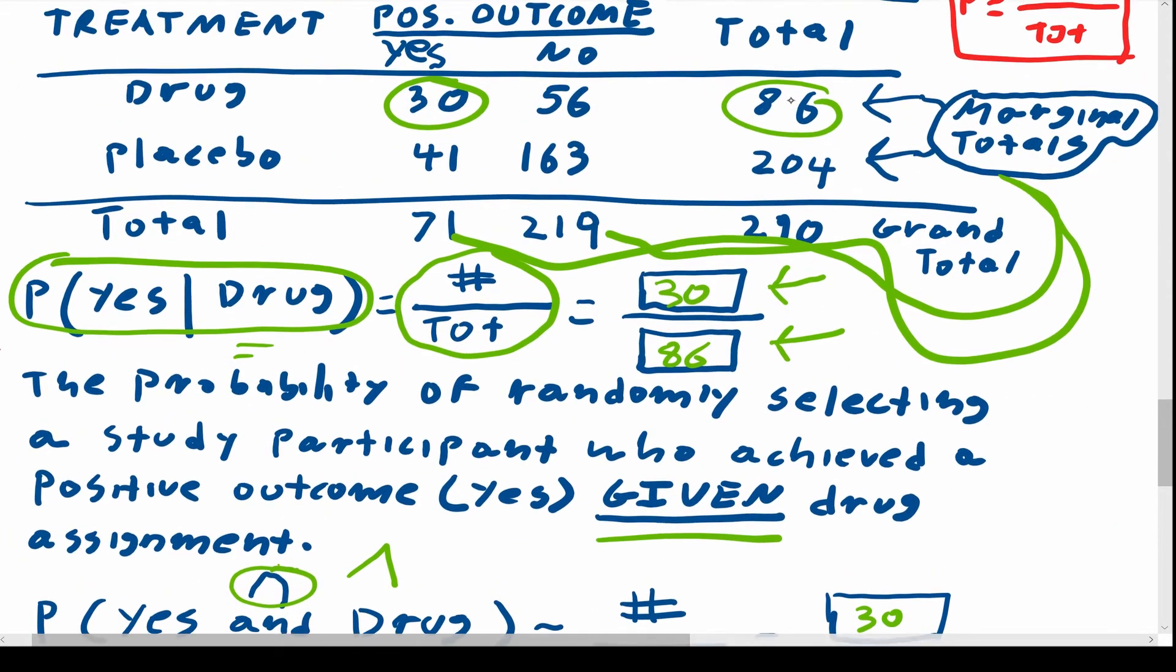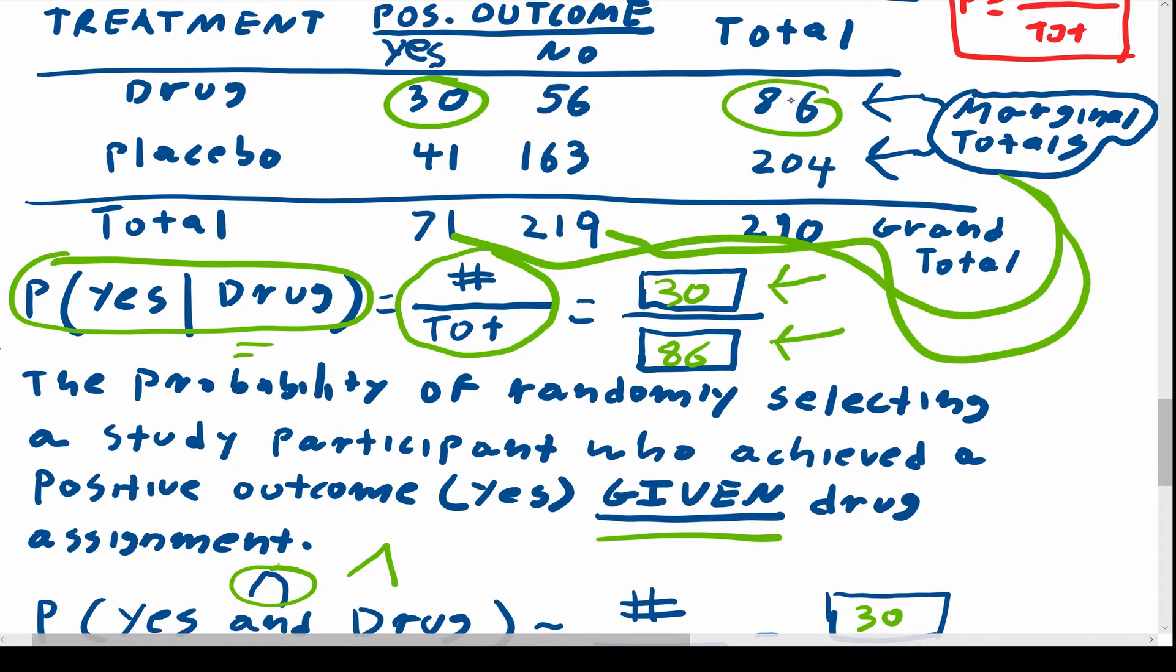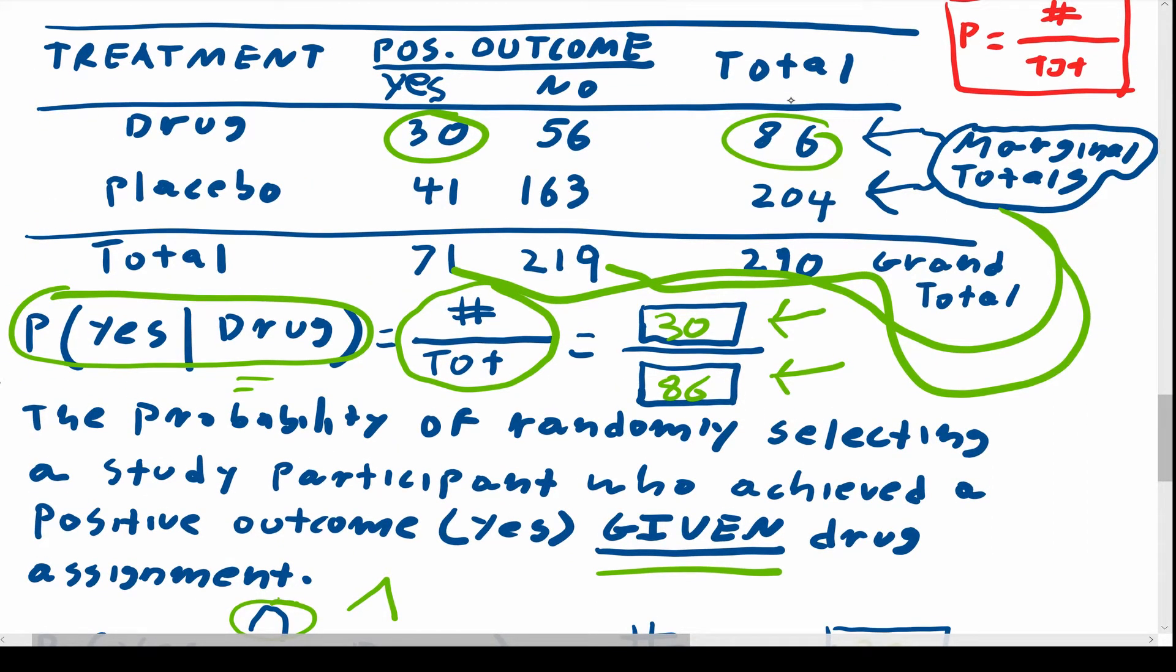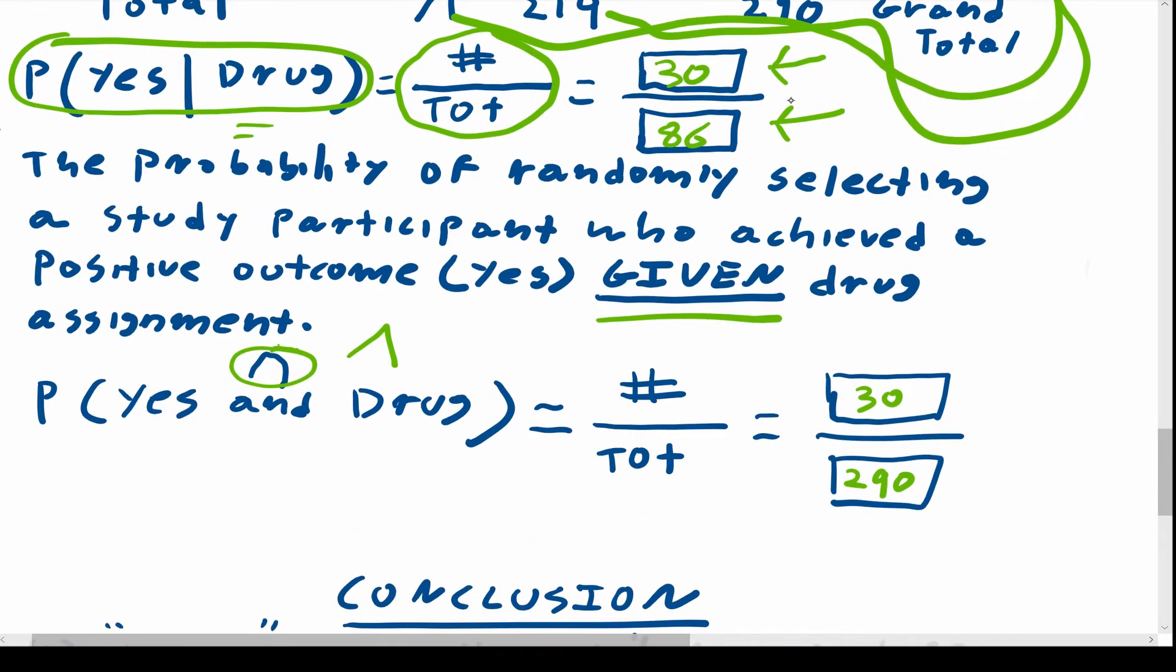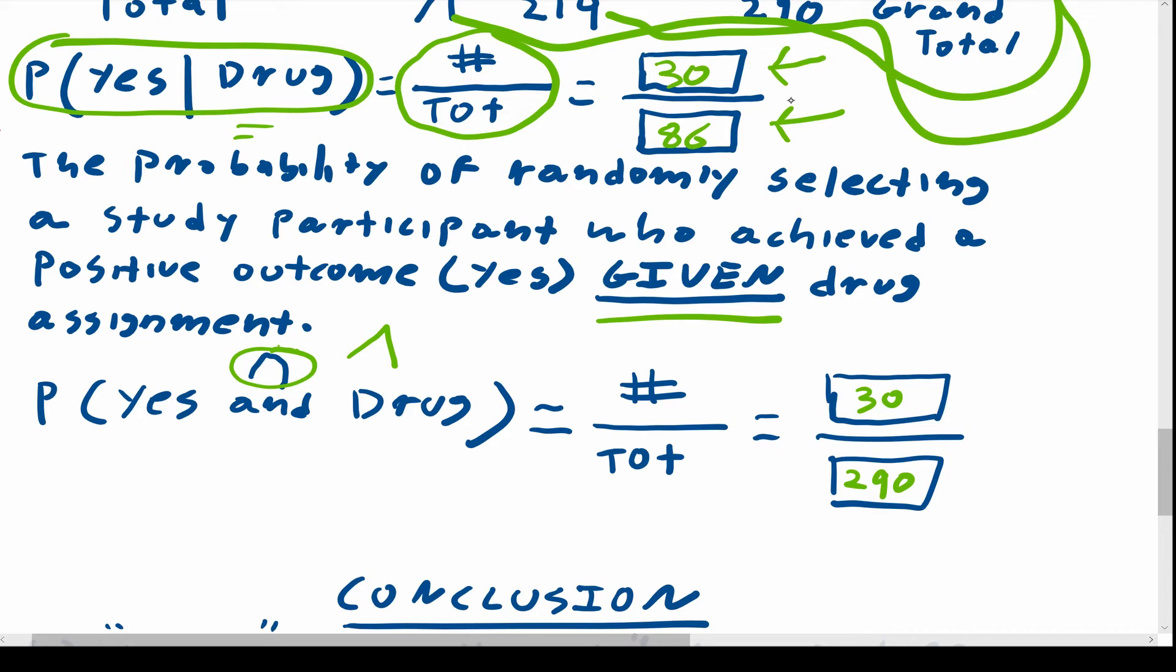So what I would do is I would on a piece of paper write out this 2x2 cross classification table. And I would make yourself two questions. One is what is the probability of yes given drug? And the other one is what is the probability of yes and drug? And make sure you understand the difference.